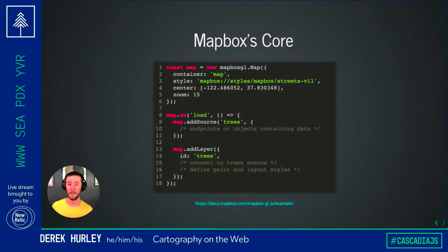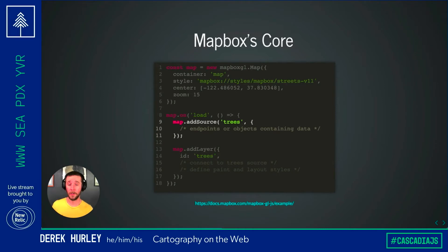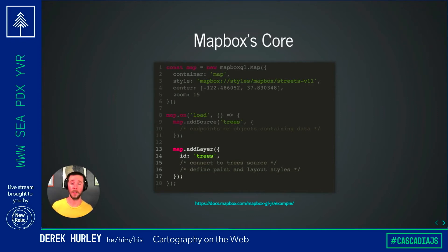With Mapbox, it's pretty straightforward to see that source-to-style-layer transition. Once you've added the instance of the map, you can just add a source to define what that looks like, and then connect it to a layer that has some bits about color and size and so on.